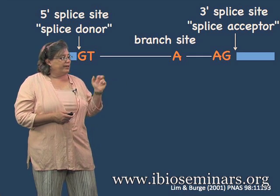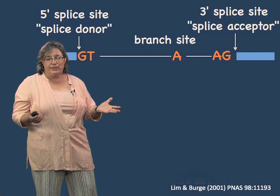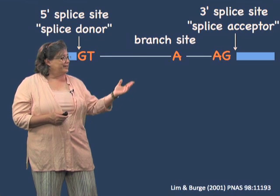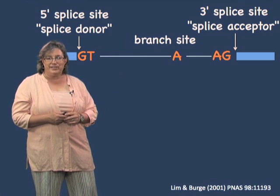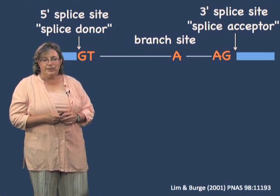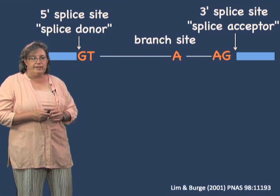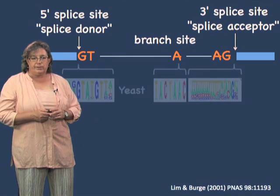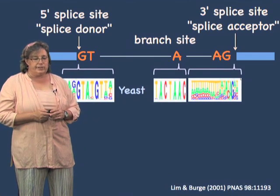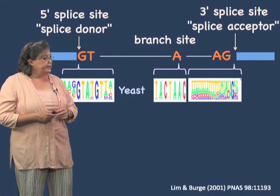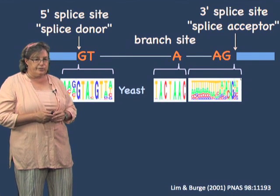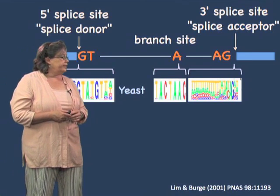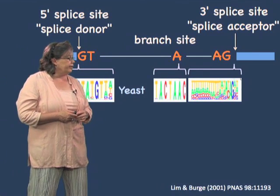Some introns are up to 400,000 nucleotides long, and certainly this amount of information content is not enough to even signify a small intron. So there must be additional sequences. In addition to these universally conserved nucleotides, there are consensus sequences in all of the introns.